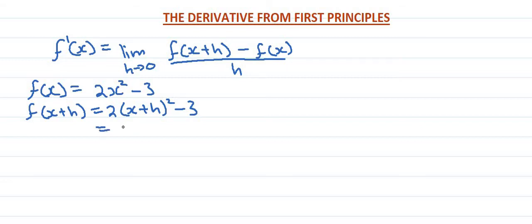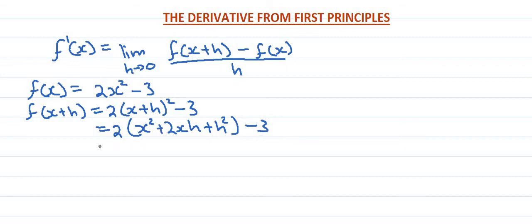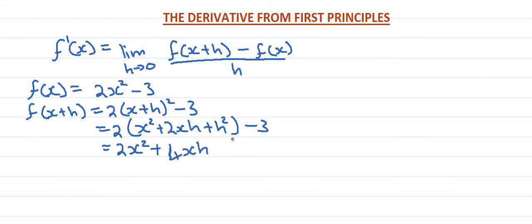So we simplify. We multiply by 2. We expand x plus h — x plus h times x plus h gives us x squared plus 2xh plus h squared. Then multiply by 2, giving 2x squared plus 4xh, minus 3.